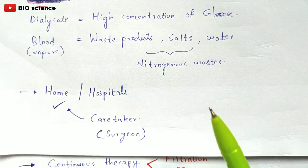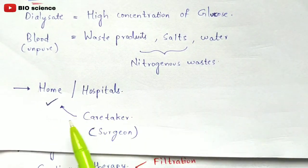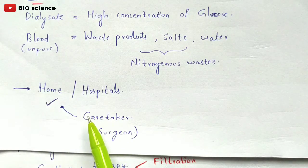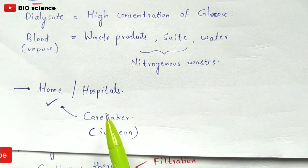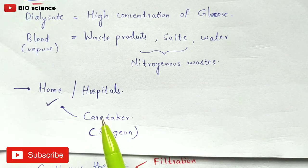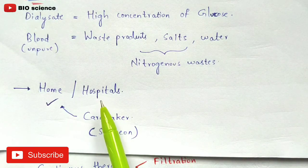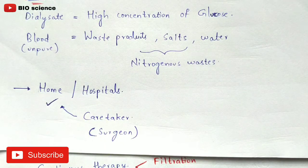This peritoneal dialysis process can be done at home rather than in hospitals. However, a caretaker — specifically a surgeon — is required because the tube must be introduced into the abdominal cavity, which cannot be done by the patient alone.